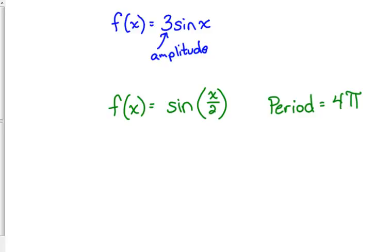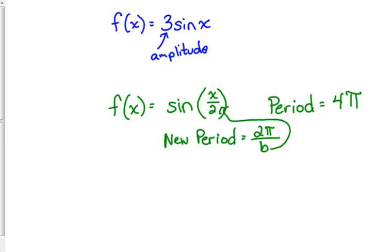Where did that come from? It came from dividing x by 2. It turns out, to figure out the new period, the new period equals the standard period 2π divided by the coefficient B — the number in front of x. The number in front of x here is one-half, so 2π divided by one-half is 4π.